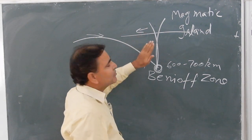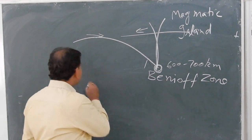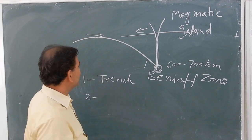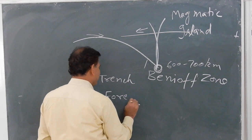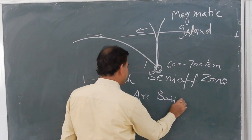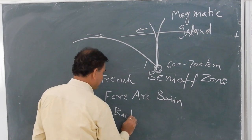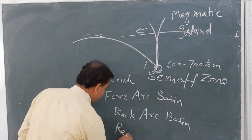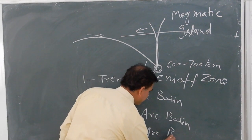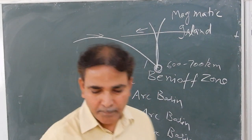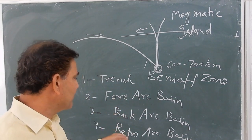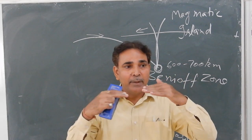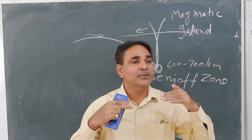In this convergent setting there are different types of sedimentary basins. Number one is the trench basin. Number two is the fore arc basin. Number three is the back arc basin. Number four is the retro arc basin. This convergent plate movement is also known as a destructive boundary because the plate is going to be consumed — subduction reduces total crustal area.